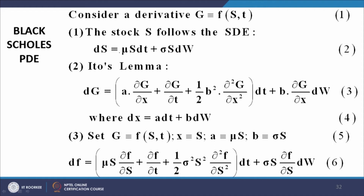The stock price follows the stochastic differential equation dS = μS dt + σS dW, so dS is normally distributed with mean μS dt and variance σ²S² dt. Itô's Lemma states that given g as a function of a stochastic variable x, where x follows dx = a dt + b dW and is also an explicit function of time, we get an expression for dg as equation 3.